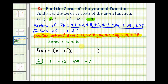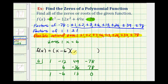Because we know six is a zero, the remainder should be zero. We bring down the one and multiply by six: one times six is six, and we add to get negative six. Negative six times six is negative 36, and we add to get positive 13. Thirteen times six is 78 — notice our remainder is zero. This quotient gives us our degree two factor: x squared minus six x plus 13.